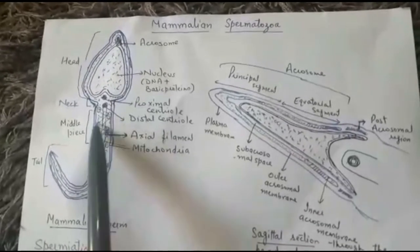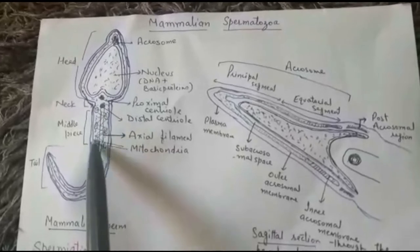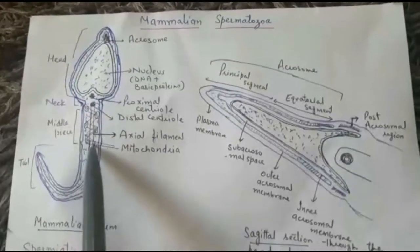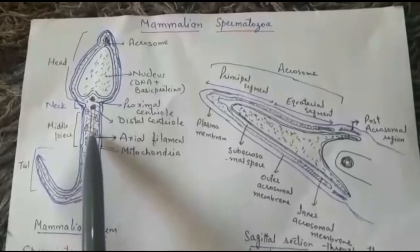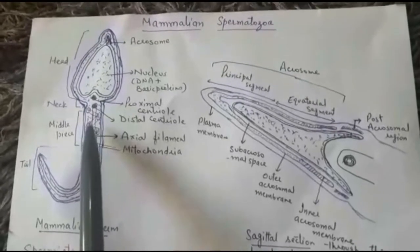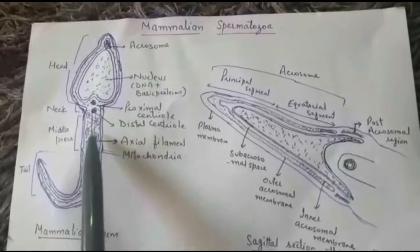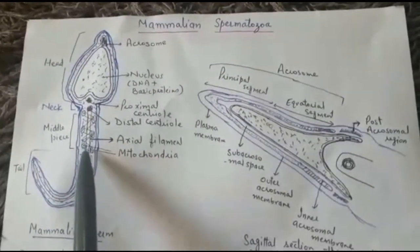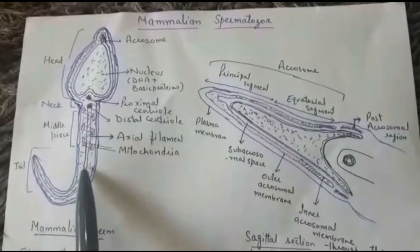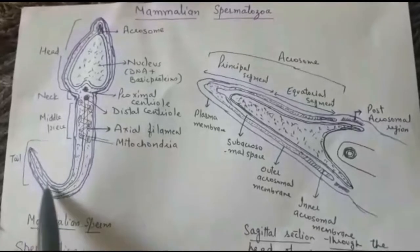From the distal centriole arises the axial filament that extends into the middle piece and the tail. In the middle piece, the axial filament is surrounded by spirally arranged mitochondria. There is a thin layer of cytoplasm plus spirally arranged mitochondria, which are the powerhouse of the sperm — they provide ATP molecules, which in turn give energy for the movement of sperm.